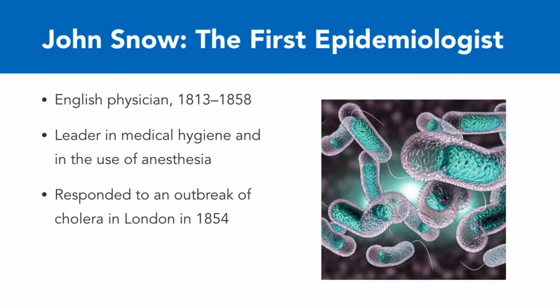John Snow was a physician in England who lived in the 1800s. He was known for being a leader in medical hygiene and a leading advocate for the use of anesthesia, which up to that point was not very common. But what John Snow is best known for is having responded to an outbreak of cholera in London in 1854.